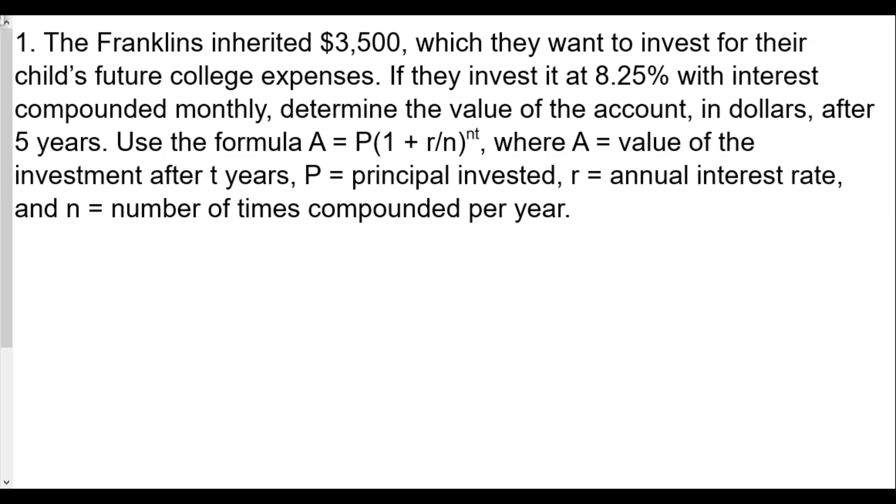We have a formula and we want to determine what values are what. The value of $3,500 is the initial amount invested, so P equals $3,500. The next thing we have is 8.25%, that'll be our r value, our annual rate of interest. Keep in mind we're not using the percent, we're using the decimal, so it'll be 0.0825.